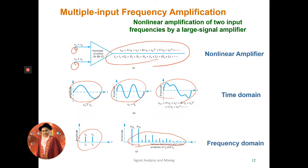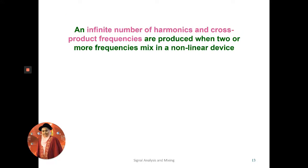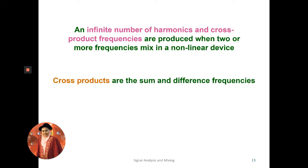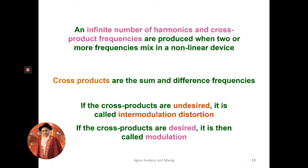These many output peaks contain various harmonics and cross products of frequencies Fa and Fb. Based on non-linear mixing with multiple inputs, the process produces two or more frequencies at the output from the cross products — meaning the summation and differences of the input frequencies. If we want these cross products in our system, the process is called modulation. If we do not want them, they become noise or interference, called intermodulation distortion.